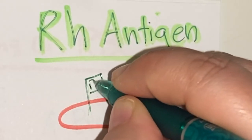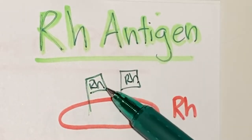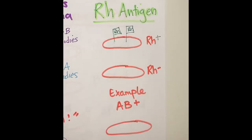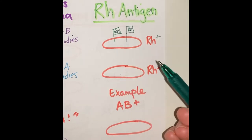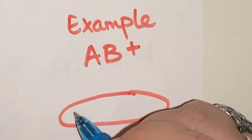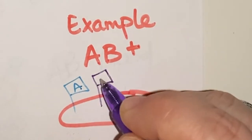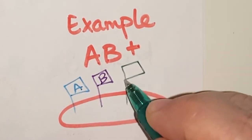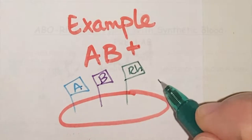Now for the RH antigen. If you are RH positive, that means you have the RH antigen. If you're RH negative, that means you don't have it. For example, if you're AB positive, you'll have the A antigen, the B antigen, and the RH antigen.